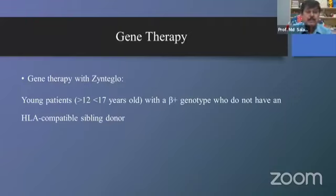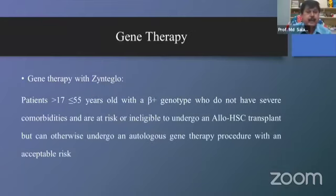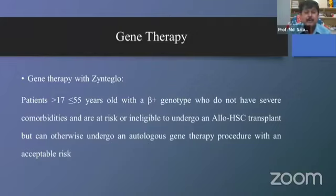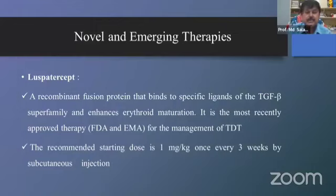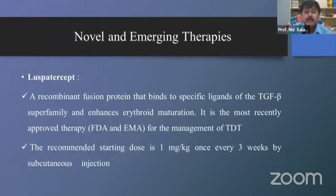Regarding gene therapy: it is not yet widely available or easily approachable for patients in most countries and remains under clinical trial. Among novel and emerging therapies, luspatercept — a recombinant fusion protein that binds specific ligands of the TGF-beta superfamily to enhance erythroid maturation — is the most recently approved therapy for transfusion-dependent thalassemia, with a starting dose of 1 mg/kg once every three weeks by subcutaneous injection. Fetal hemoglobin inducers such as hydroxyurea are also used in thalassemic patients.